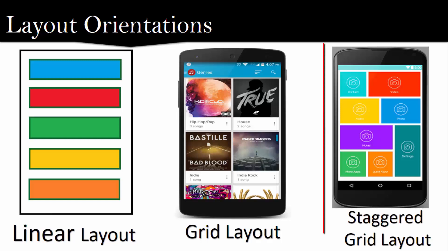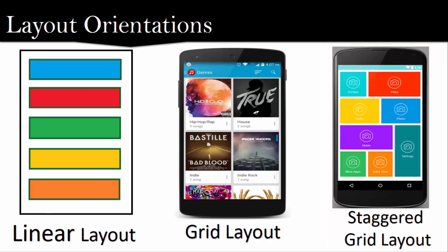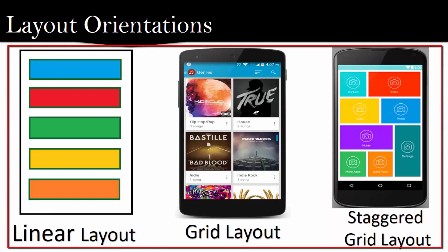The last and third type of layout orientation is staggered grid layout orientation. As you can see here, all the images have been arranged in random manner — that is, they are arranged as per their size in a random manner in staggered grid layout orientation. These are the three types of layout orientations that will be used while using RecyclerView.